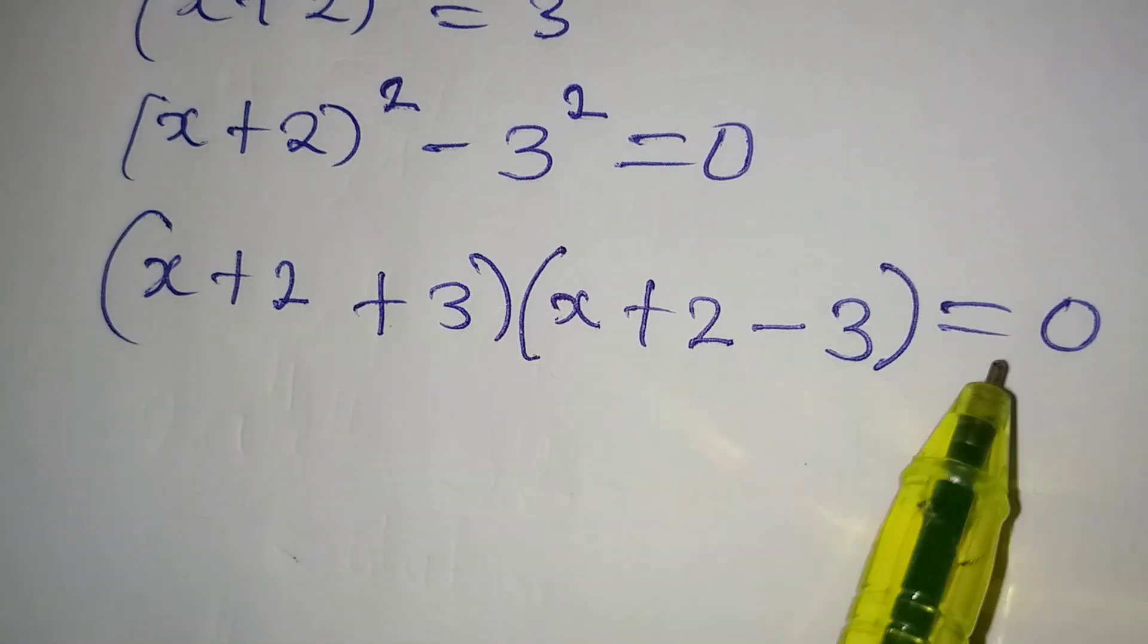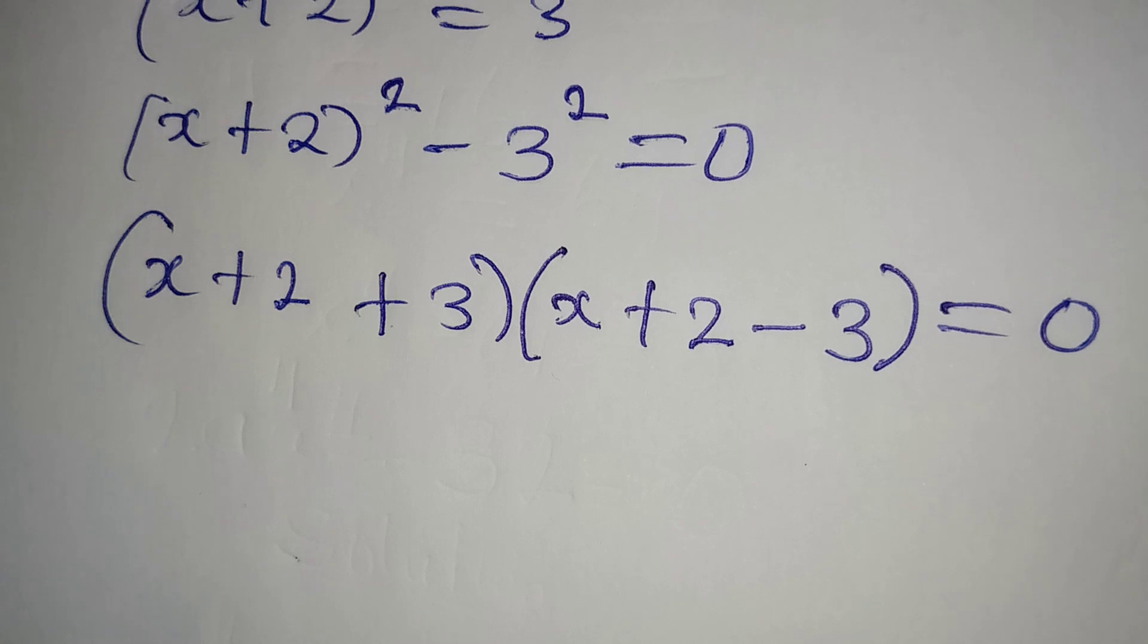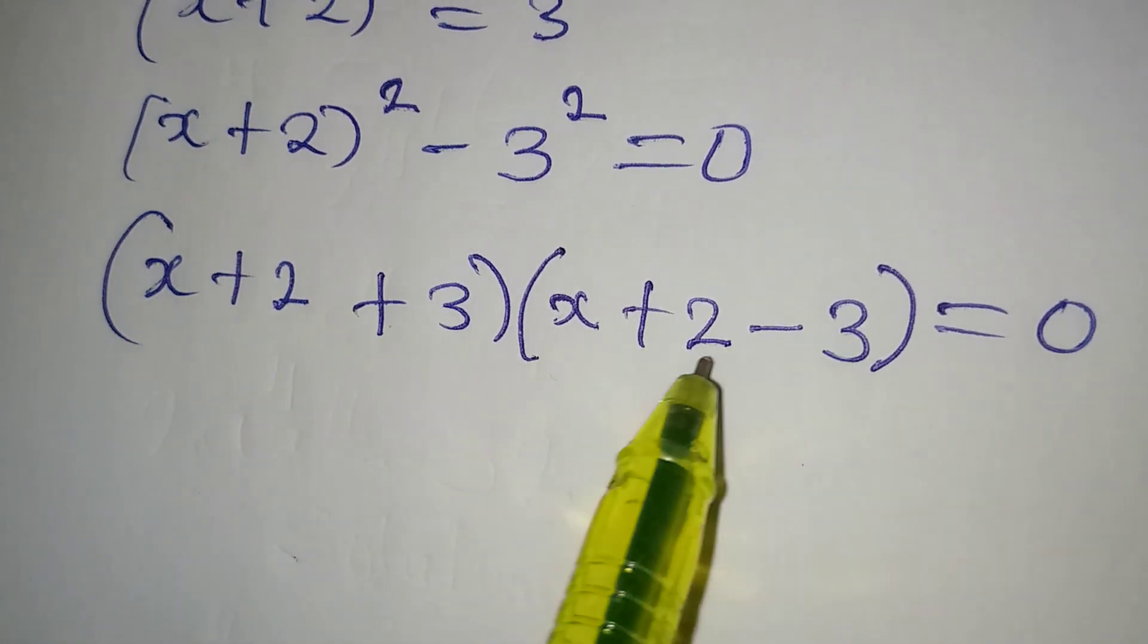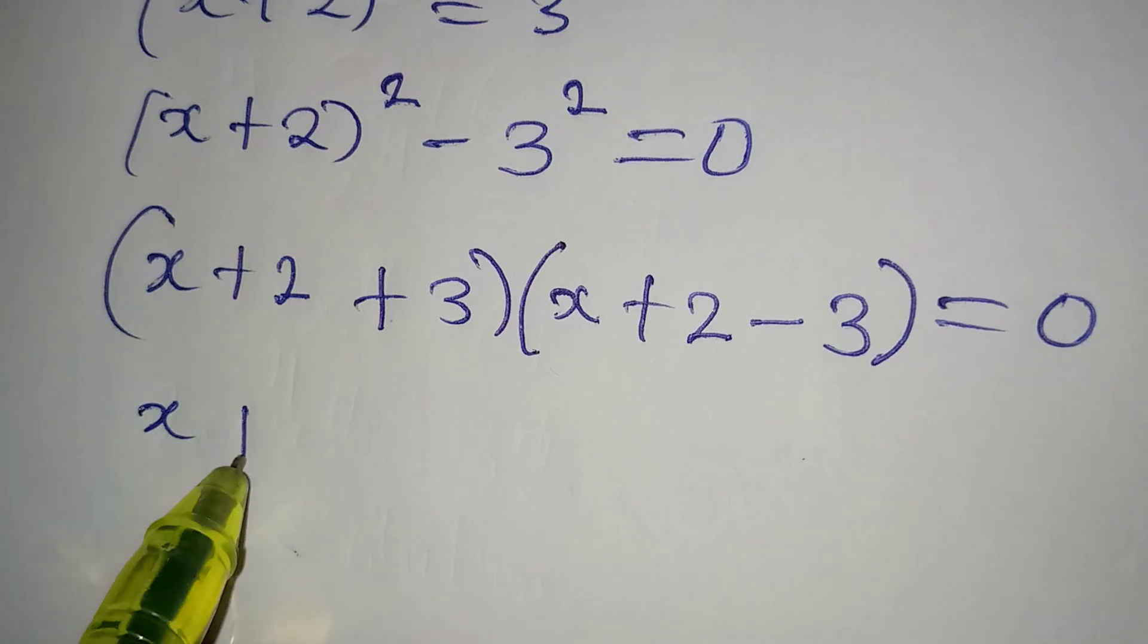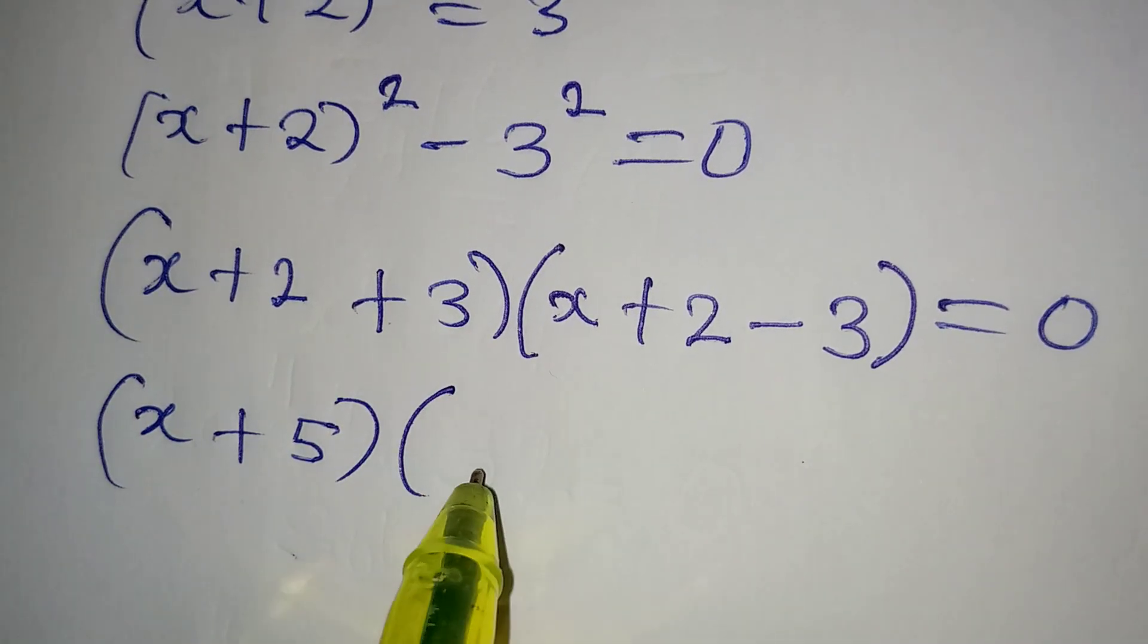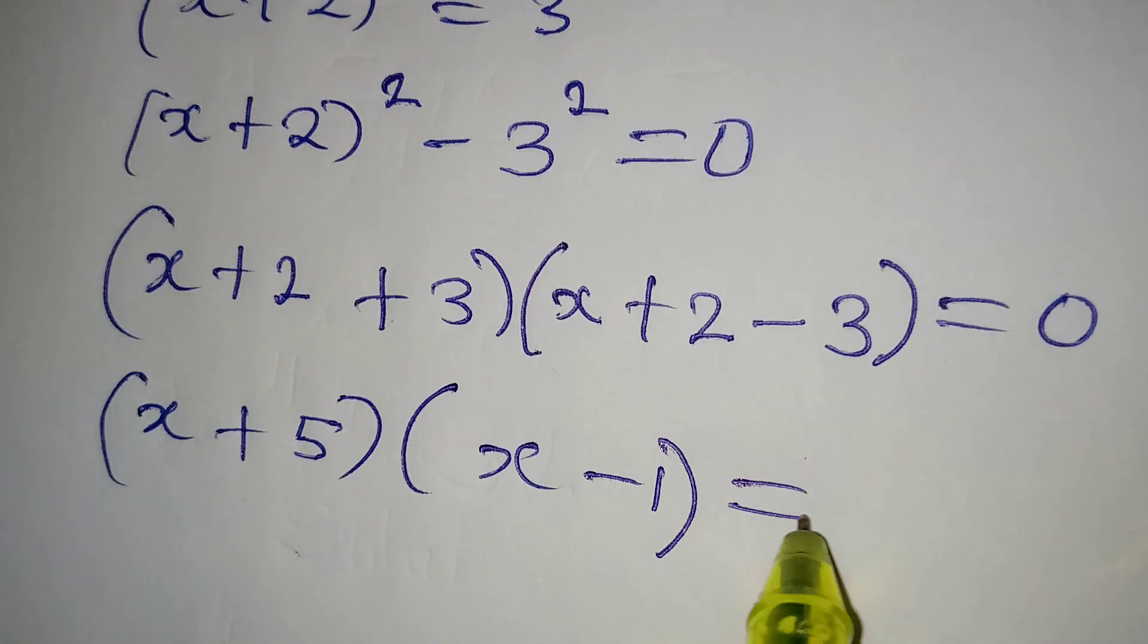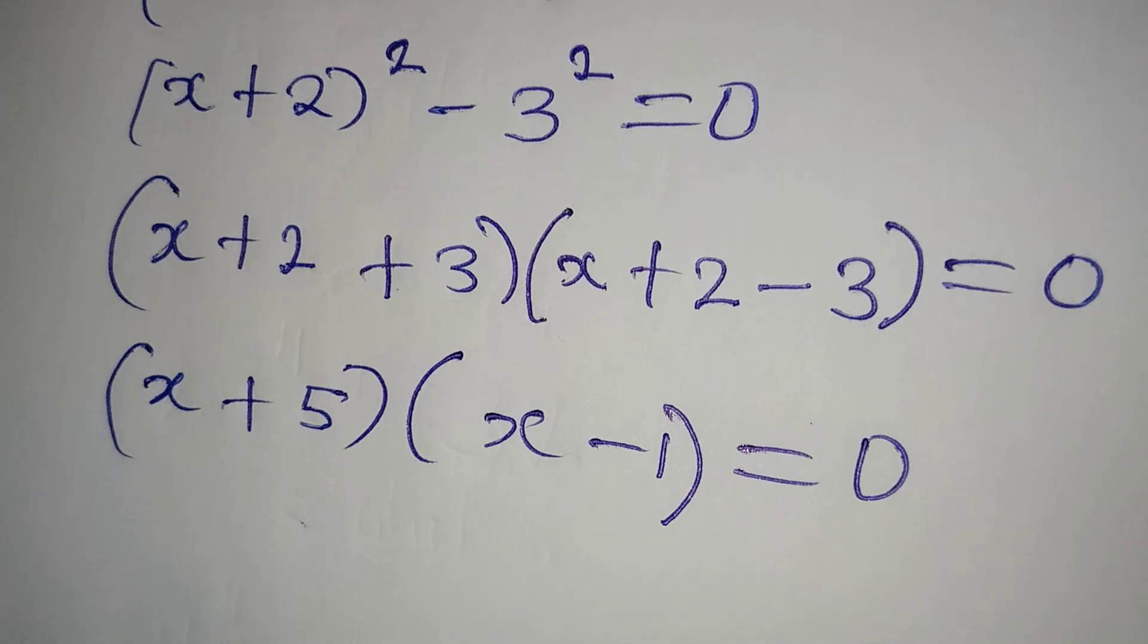in this case we are going to have negative because this is positive. So both of them will be equal to 0. Now the next thing we are going to do is add this and this and then subtract this 2. So we have x plus 5 in the first bracket and then we have x minus 1 in the second bracket and both of them are equal to 0.